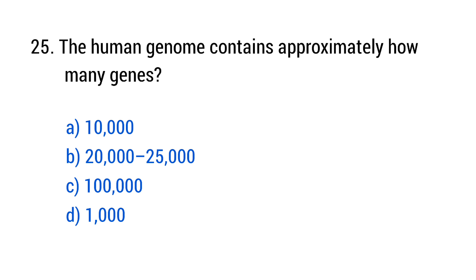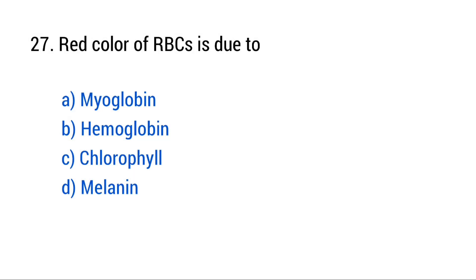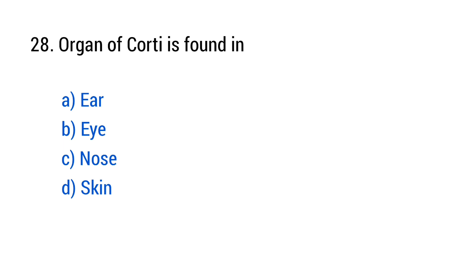Question number 21. Asexual reproduction in yeast occurs by? The right answer is option A, budding. Question number 22. In which kingdom are viruses placed? The right answer is option C, not in any kingdom. Question number 23. Haversian canals are found in? The right answer is option B, compact bone.